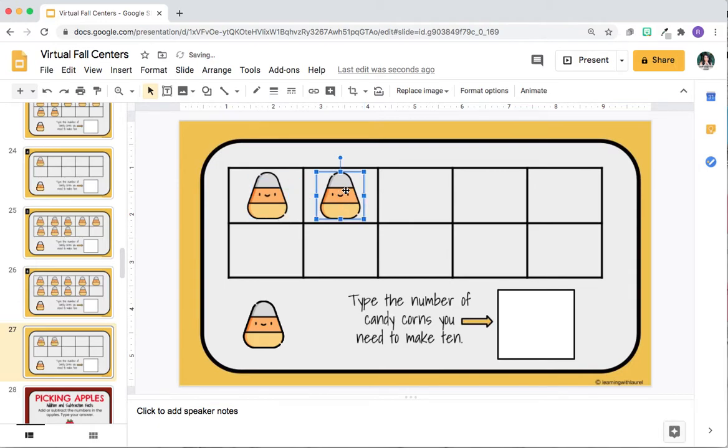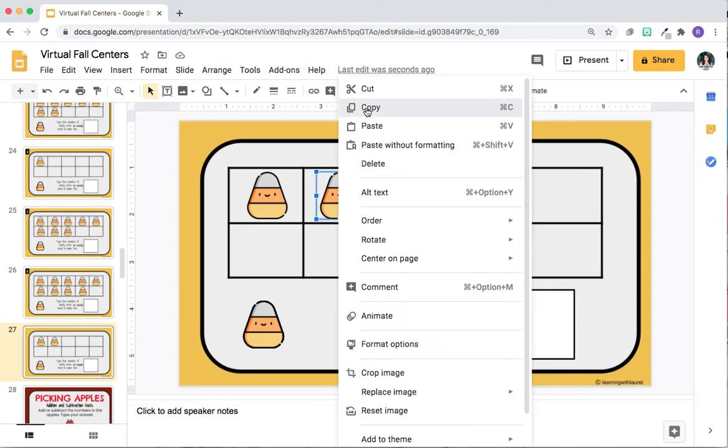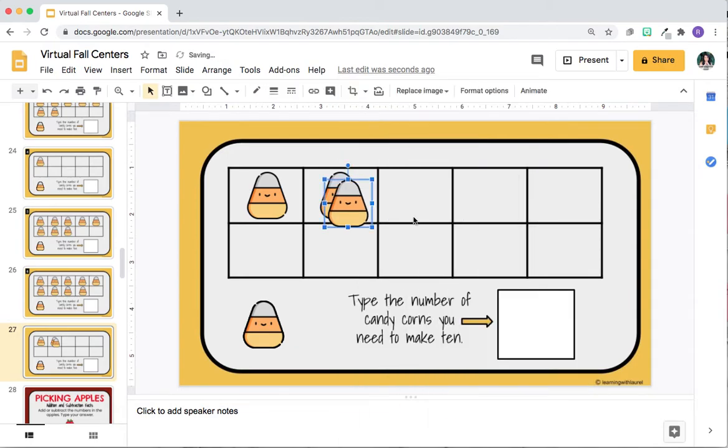Another way to do this is to right-click, copy, right-click, paste. And then you would add as many candy corns that you'd like on the 10 frame.